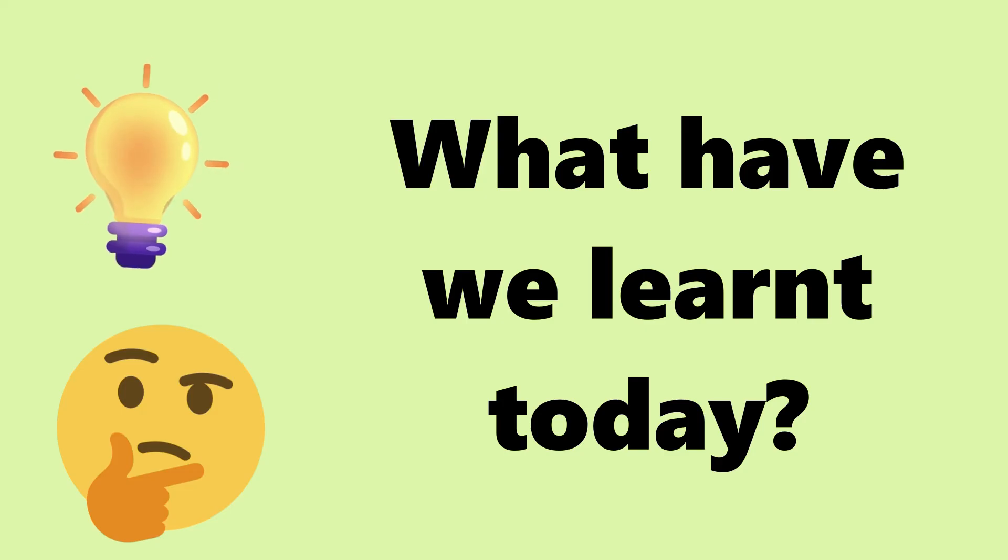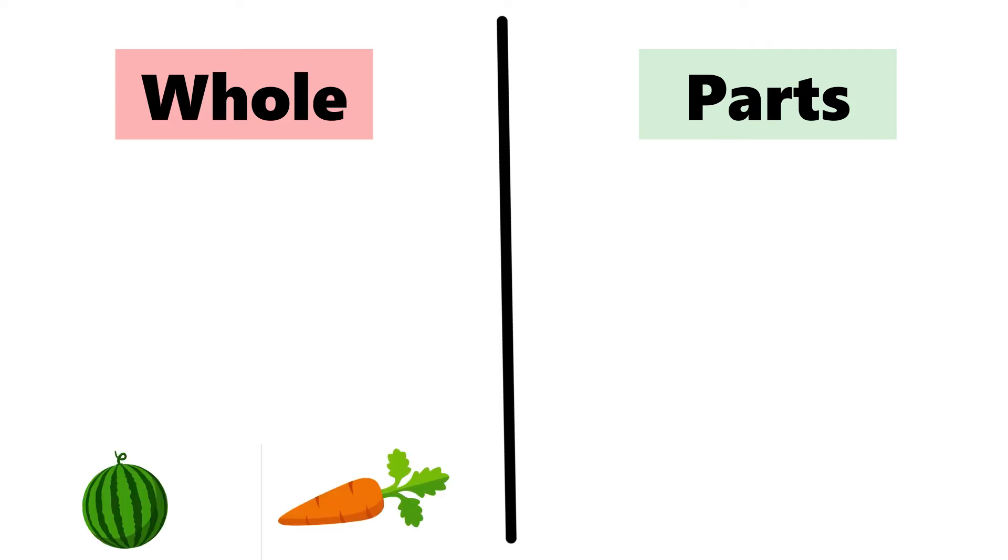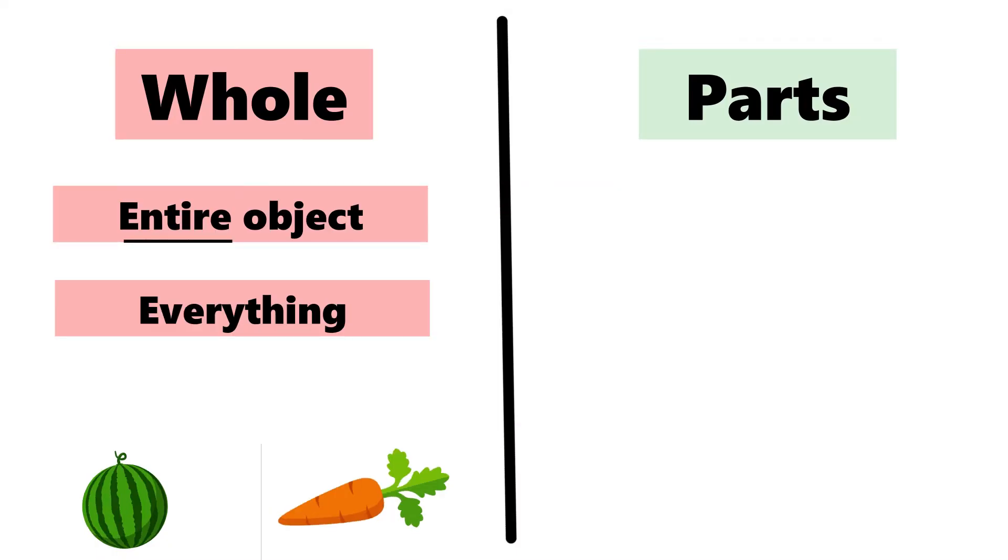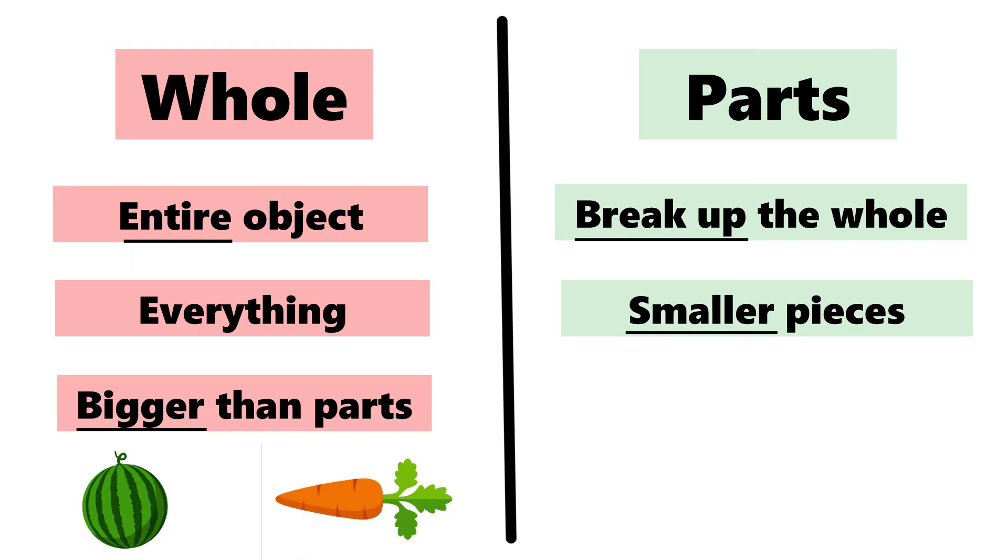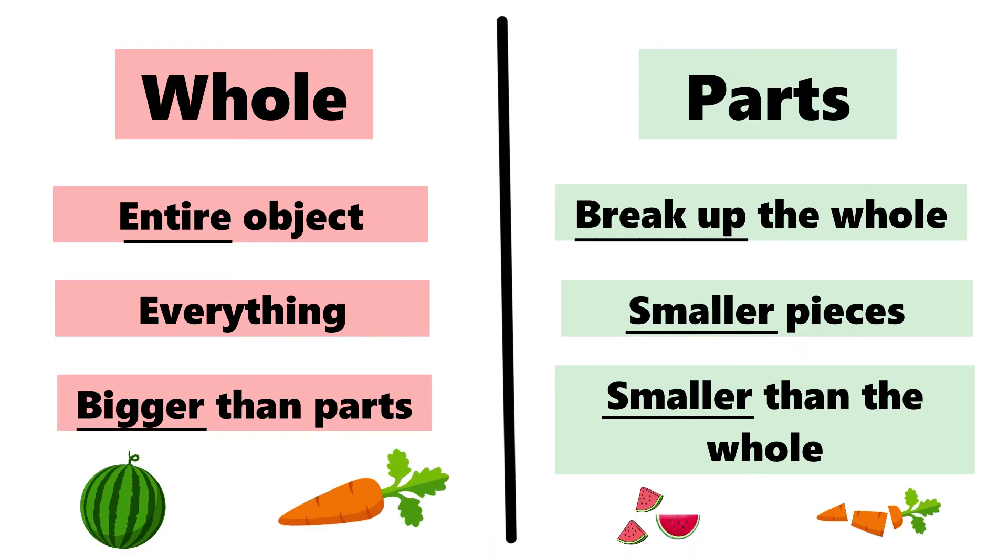What have we learnt today? We learnt about whole and parts. We learnt that the whole means the entire object or everything. It is bigger than the parts. When we break up the whole into smaller pieces, that's when we get parts. Parts are smaller than the whole.